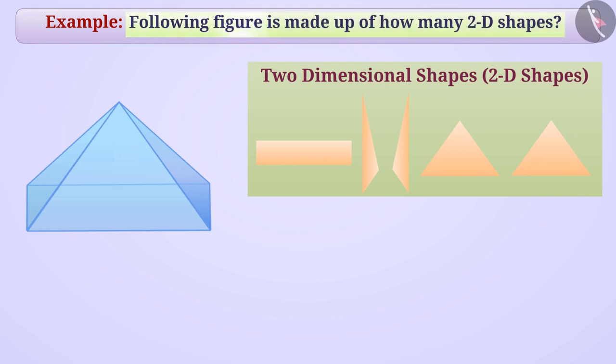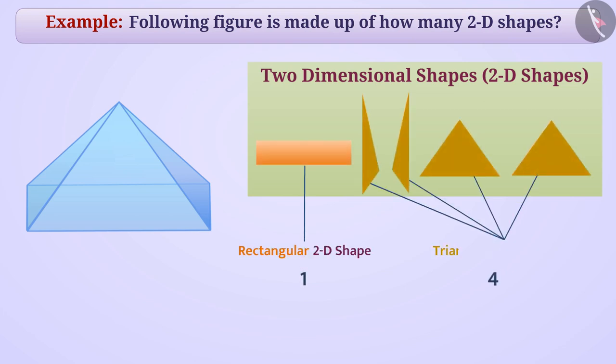To find out the number of 2D shapes in this figure, we have to count all these 2D shapes. We see that this shape is made up of one rectangular 2D shape and four triangular 2D shapes. That is, this shape is made up of one plus four equals five two-dimensional shapes.